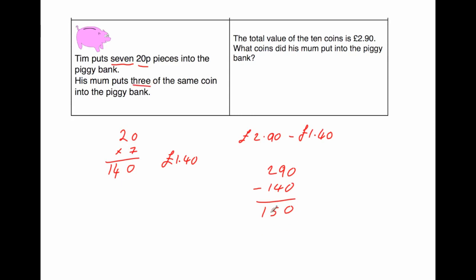Now she put in 3 coins. If we divide £1.50 by 3, well I can already tell it's going to be 50p coins because 3 fifty pence pieces is £1.50. But if we do 150 divided by 3, well 3 into 1 doesn't go, remainder 1. 3 into 15 goes 5 times, and 3 into 0 goes 0 times. So the answer is 50p's. His mum put in 3 fifty pence coins. And that's it.